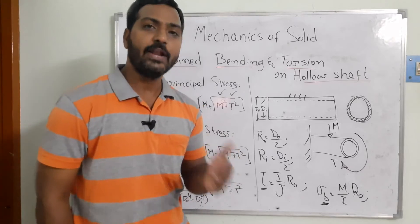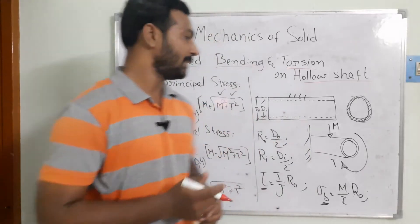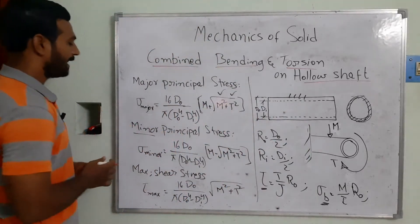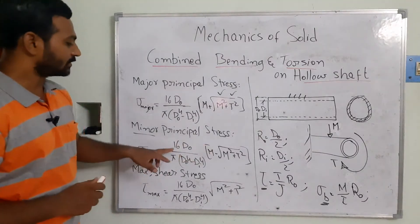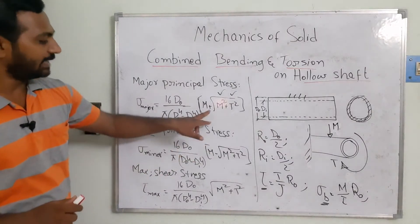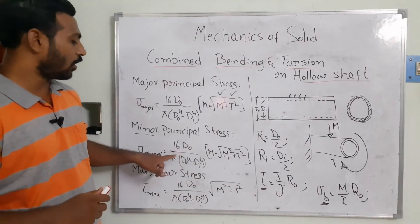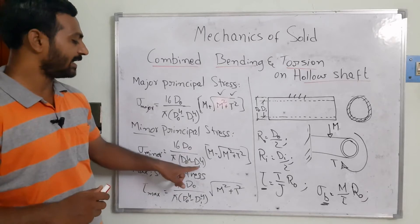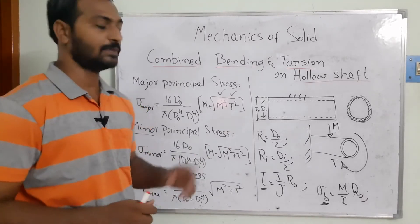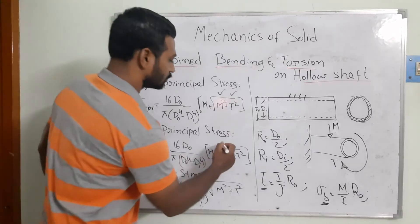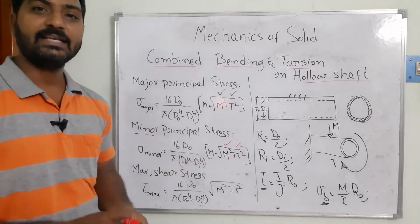The second one is the minor principal stresses. The minor principal stresses use the same equation but with a minus sign instead of plus: σ_minor = (16 × D-not) / (π × (D-not⁴ − D-i⁴)) × (M − √(M² + T²)). In this case also, the two loads appear together in a single equation.